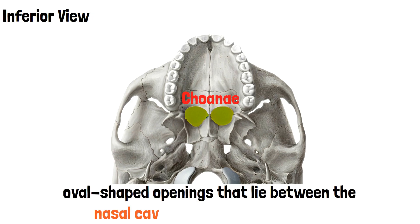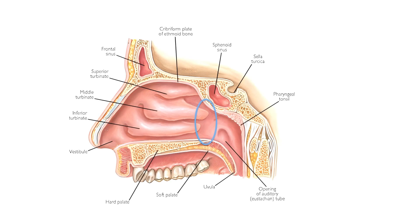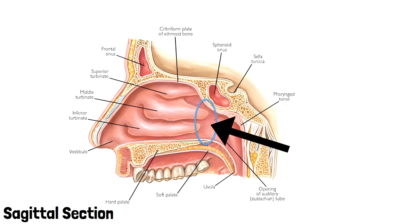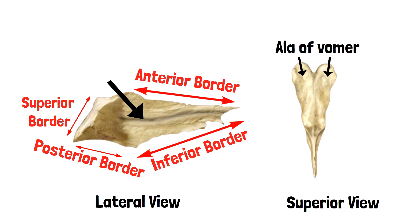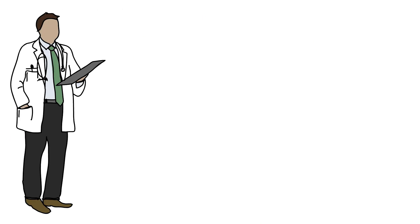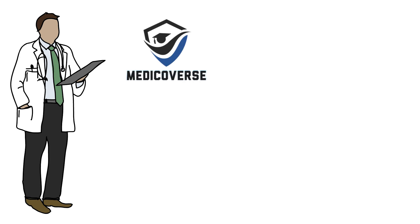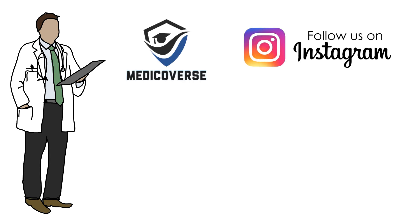The posterior border separates the posterior openings of the nasal cavity called the choanae — the areas shaded in yellow. Choanae are oval-shaped openings that lie between the nasal cavity and the nasopharynx. In the sagittal view, the coana is encircled in blue. On the lateral surface, the nasopalatine groove transmits the nasopalatine nerve. That is it for this video — don't forget to subscribe to the channel and follow us on Instagram.